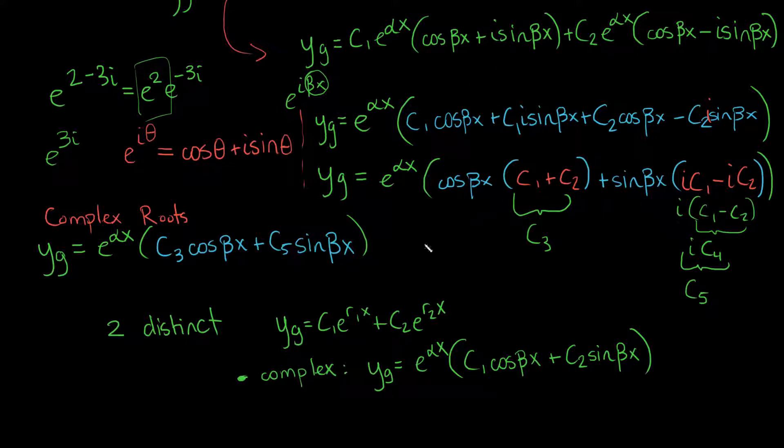And if we had only one double root, then we're left with the general solution is c1 times e to your only root, r times x, plus c2, x itself, times e to the rx, and we proved that in the previous video.